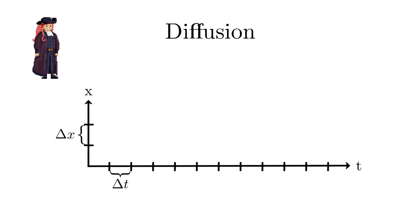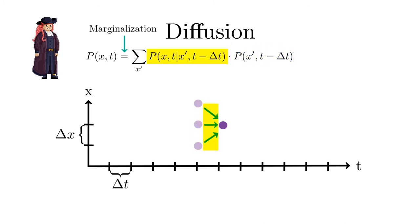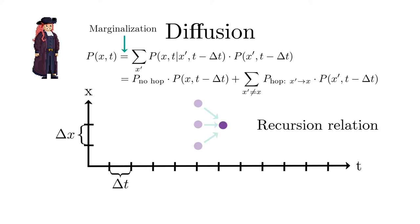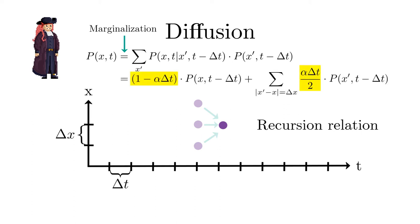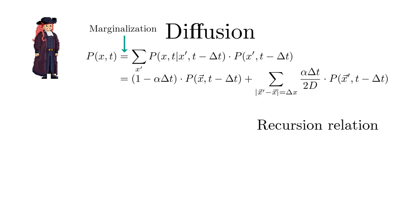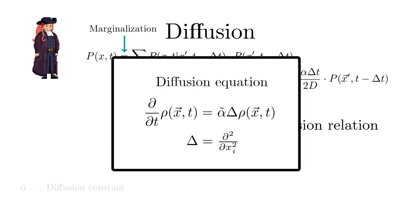The trick now is to express the probability to reach position x at time t via the marginalization rule as a sum over probabilities for the positions x' at time t minus dt times the hopping probability from x' to x in one time step dt. That leads to a recursion relation. The same trick will be discussed in greater detail in case of the Markov process. Here we are more interested in the final result. Rewriting the recursion relation and taking the appropriate limit dt to 0 and dx to 0 leads to the well-known diffusion equation. Here alpha is the diffusion constant and rho stands for the probability to find the particle at time t at position x.